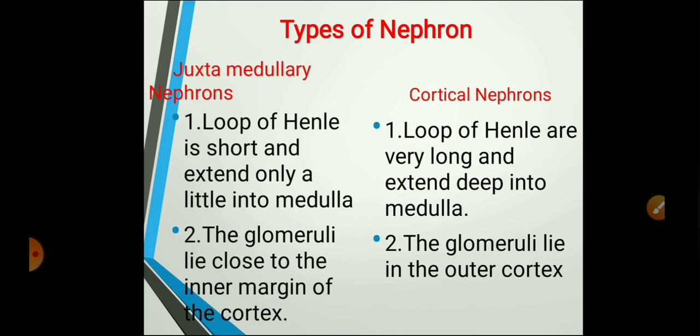Today we discussed what excretion is, the three different types of organisms based on the major excretory product, the human excretory system, the structure of the kidney in detail, and the structure of the nephron. Please study the structure of the nephron in detail, including the diagram. That's all for today. Thank you.